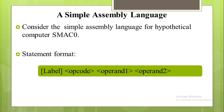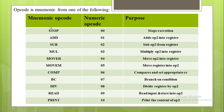The opcode is a mnemonic from one of the following. The first mnemonic opcode is STOP, corresponding to numeric opcode 00 — its purpose is to stop the execution of the program. The next mnemonic opcode is ADD, corresponding to numeric opcode 01, which adds operand 2 into the register.